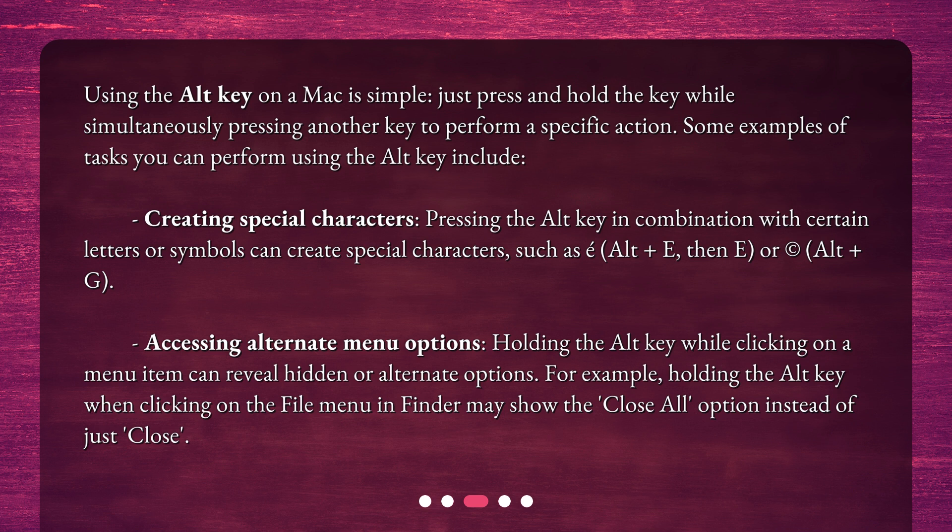Accessing alternate menu options: holding the Alt key while clicking on a menu item can reveal hidden or alternate options. For example, holding the Alt key when clicking on the File menu in Finder may show the Close All option instead of just Close.